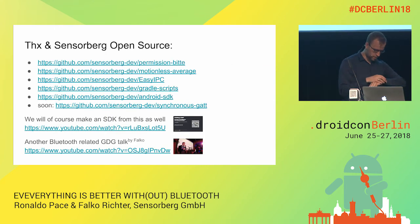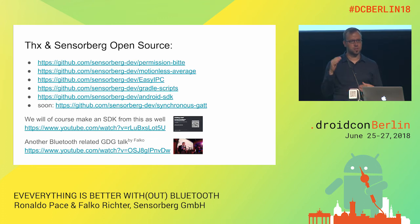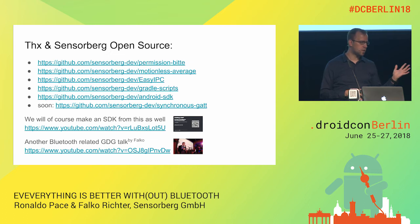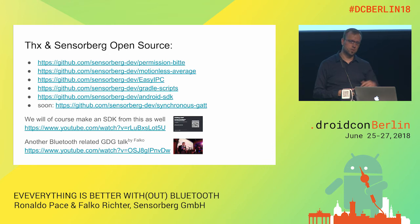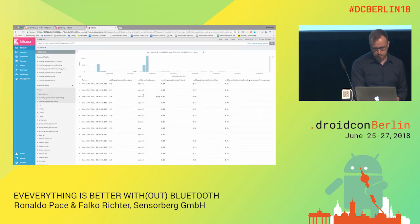In this process of building all this, we open-sourced some things. The synchronous GATT library — the actual code doing connect, discover, write, wait for answer — will be under that URL pretty soon. We did a talk about building an SDK. Opening doors and communicating with your building is going to be available as an SDK soon as well. And there is an old talk by me about Bluetooth in general if you want to learn more. So we can do a little live demo.